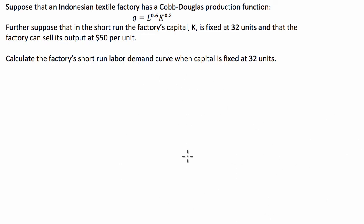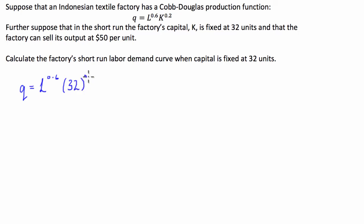When capital inputs are fixed at 32 units, we can directly link the factory's output Q to the labour inputs L by substituting our capital stock of 32 into our Cobb-Douglas production function. So we have Q = L^0.6 × 32^0.2. Now 32^0.2 is the same as 32 to the power of one-fifth, which is the fifth root of 32, which equals 2. So this simplifies to Q = 2L^0.6.